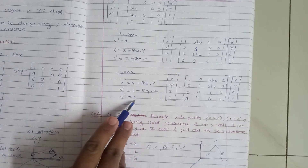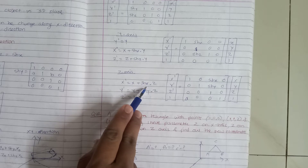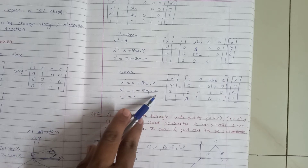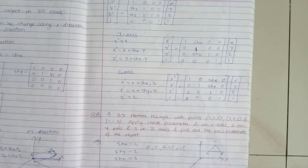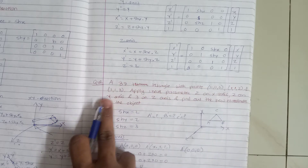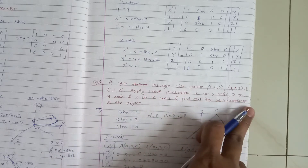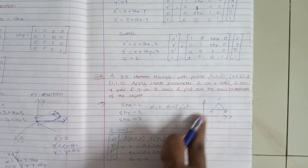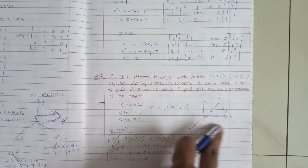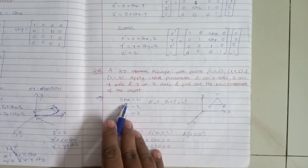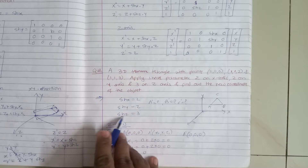For z-axis shearing, z becomes the same, and x and y change. So x becomes x plus shx multiplied by z, and y becomes y plus shy multiplied by z. Now let's look at an example: a 3D triangle is given with specific points. Apply shear parameter 2 on x-axis, 2 on y-axis, and 3 on z-axis, and find out the new coordinates of the object. The shearing parameters given are: shx = 2, shy = 2, shz = 3.